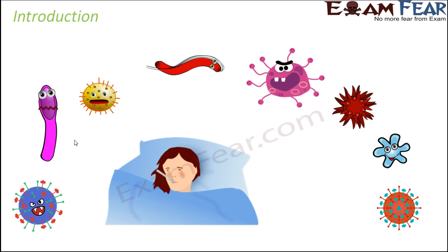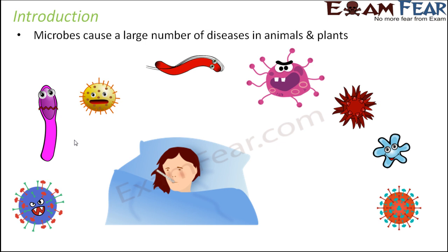Many of them are pathogens and some cause very deadly diseases. We discussed in a previous lesson about infectious and non-infectious diseases — like typhoid, malaria, diphtheria, AIDS — and saw that all of them involved some pathogen. Microbes cause a large number of diseases not only in animals but also in plants, where so many diseases in different types of plants are also caused by various microorganisms.